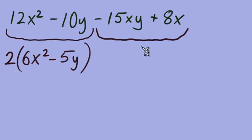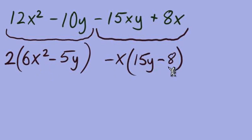We know that the quantity in parentheses has to match up, but it looks like our only common factor is x. We can make that negative, but left in parentheses we'll still have 15y minus 8 and definitely we do not have a match.